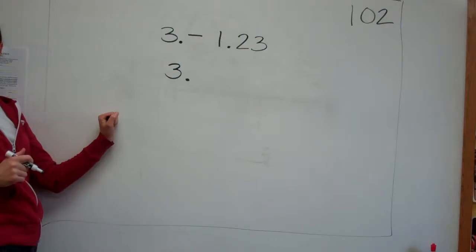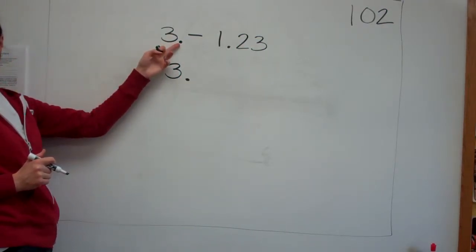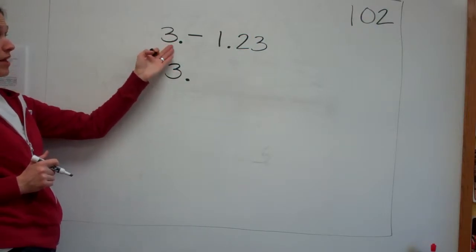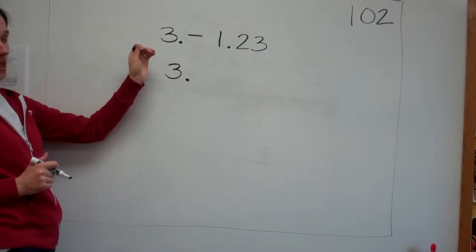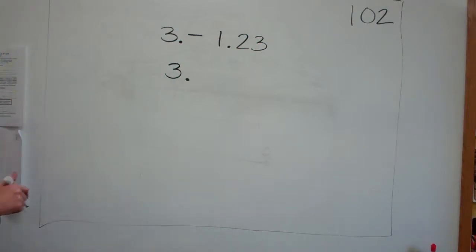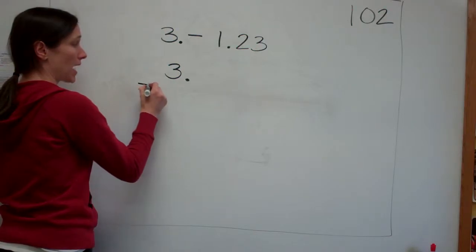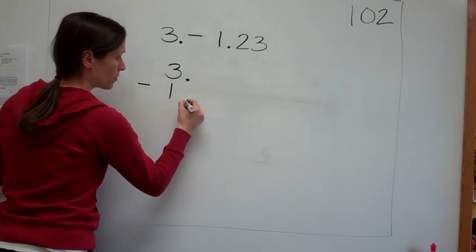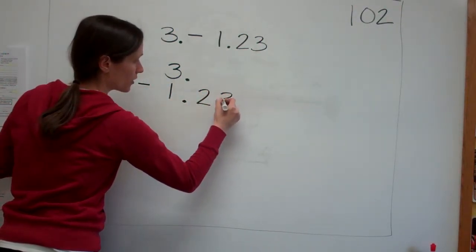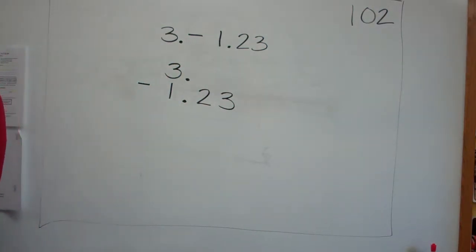Every decimal is behind the last, the ones place, no matter what. There's a decimal behind every number, even if it doesn't show it. So there's a decimal there, and then I'm going to minus 1.23. What do I need to do?